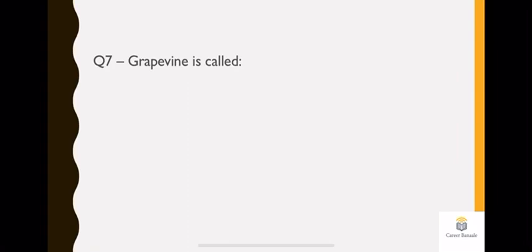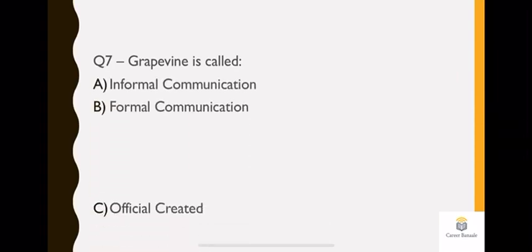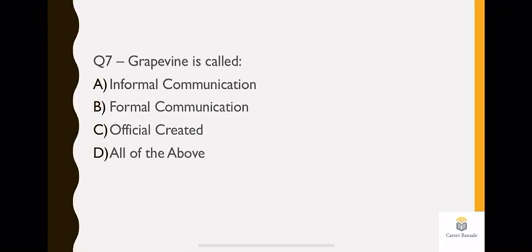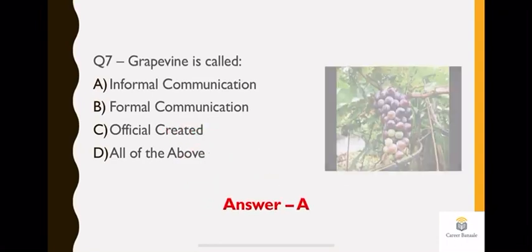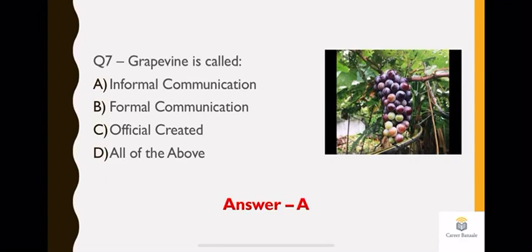Question number seven: grapevine is called what? Grapevine is like a bunch of grapes. As you have seen, when many grapes are together, that is an example of grapevine. This grouping of employees is never done formally by the organization. It is always done informally. Employees informally take the form of grapevine. So the answer is option A, which is informal communication. As you can see on the screen, I have shown you an example of grapevine. You can see that one grape is with three, four or more grapes. This never happens in formal organization or formal communication. When formally something is told to you, you never have one employee associated with many employees. This generally happens in informal communication cases, and grapevine is an example of informal communication.